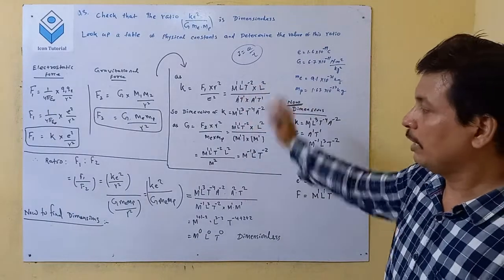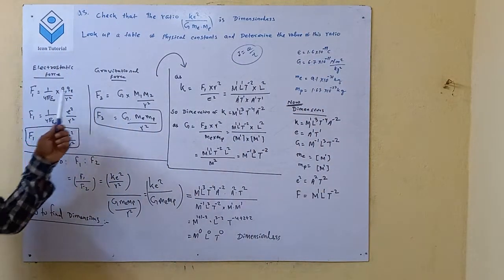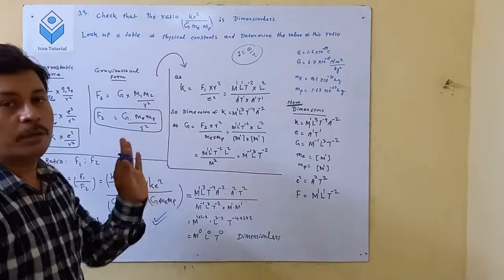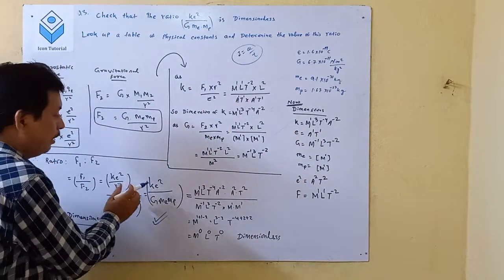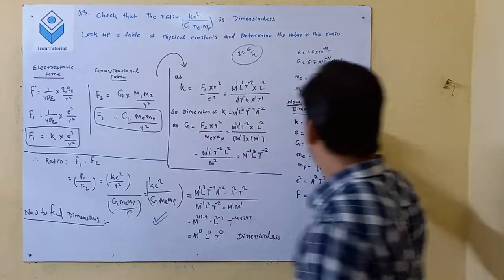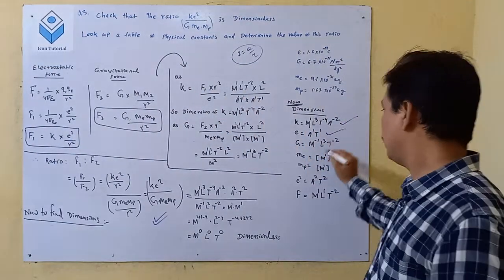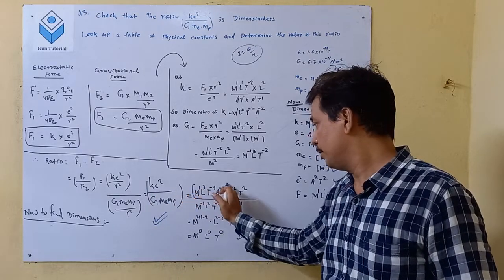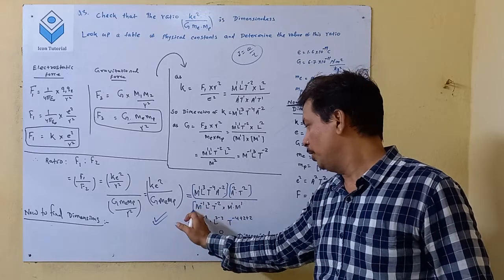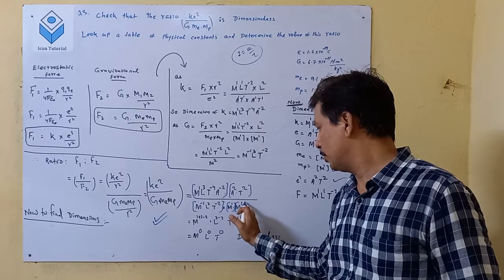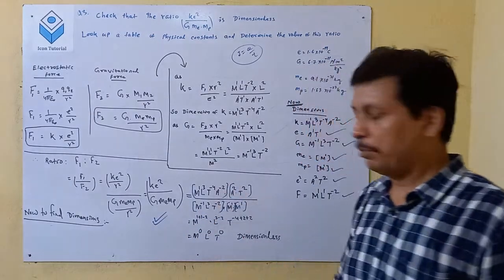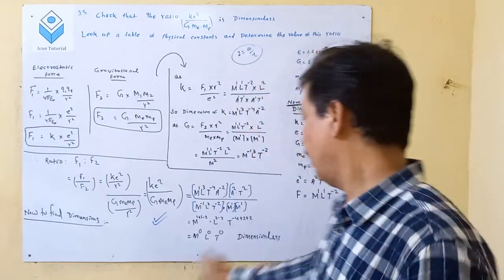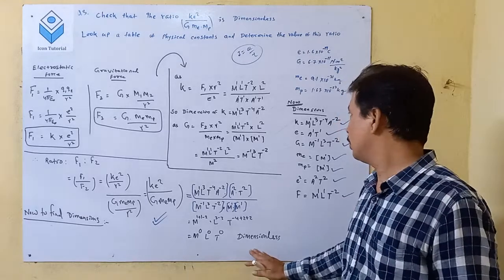Now both dimensional formulas of k and G are calculated. We look at the ratio F1/F2 and put in the dimensions of k, e, G, me, and mp. After substituting the dimensions of each quantity — k, e², G, me, mp — all the powers cancel out, giving M⁰L⁰T⁰. This confirms the ratio is dimensionless.